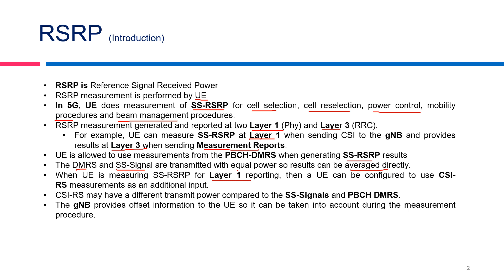CSI-RS are basically channel state information reference signals and can use additional inputs in terms of offset. If CSI-RS have different transmit power compared to SS signals and the PBCH-DMRS signal, then the gNB in 5G can provide the offset information to the UE so that it can be taken into account for the measurement procedures.